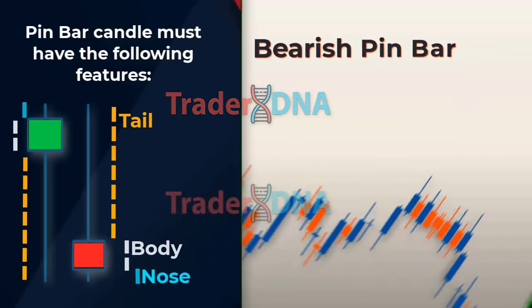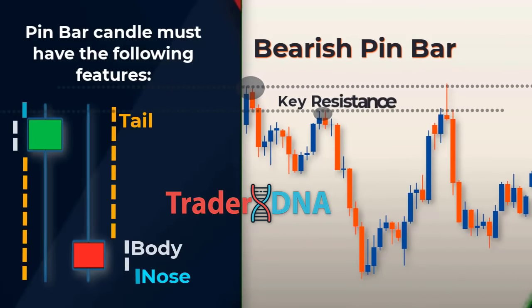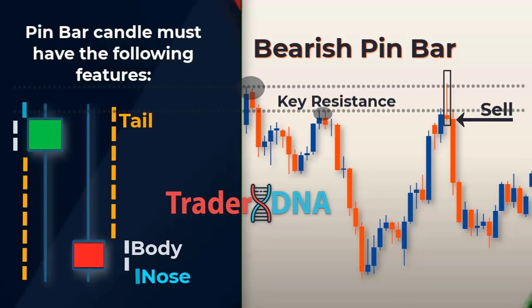For a bearish pin bar: the bearish pin bar is located at the end of a bullish trend and its longer candle wick is in the upper area, sticking out above the price action. The bearish pin bar is usually a good sign of an upcoming price reversal in the bearish direction. With bearish pin bars, your stop loss always needs to be placed just above the high of the pin.